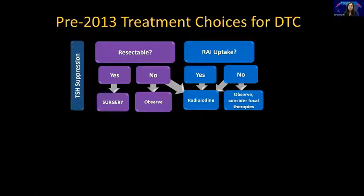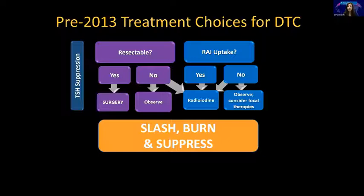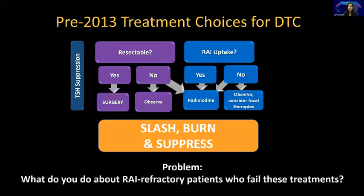Before 2013, for differentiated thyroid cancer, we had very few options. We would remove the tumors, suppress the TSH, and give radioiodine. If the patient continued to progress, give more radioiodine. But really there wasn't much else except to refer patients to clinical trials, and so we needed therapies for patients that had become radioiodine refractory.